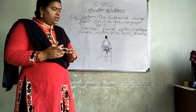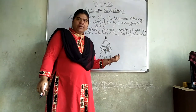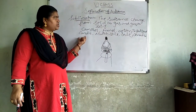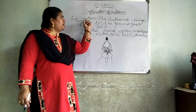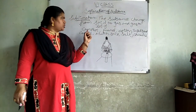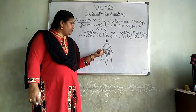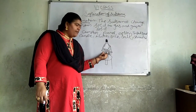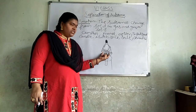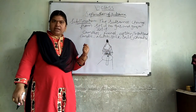So try to understand what sublimation is. Sublimation means the substance changes from solid to gas and gas to solid. The things required are: camphor, salt, tripod stand, candle, chain dish, funnel, and cotton.